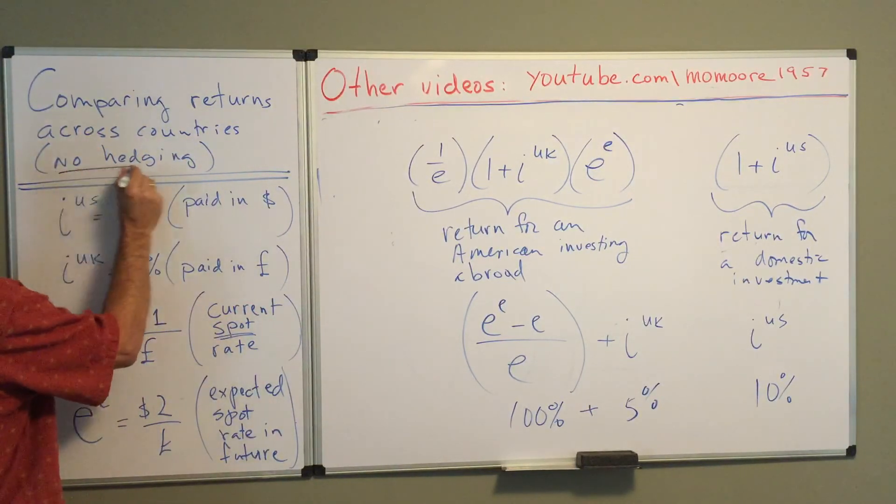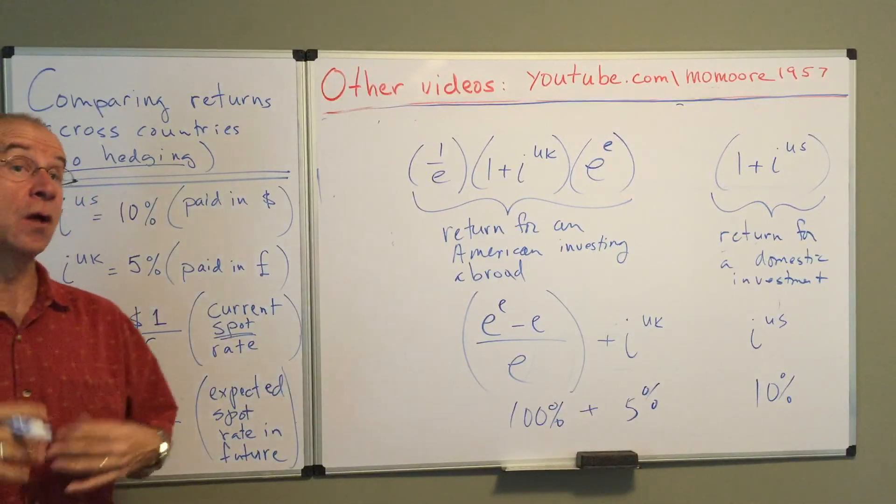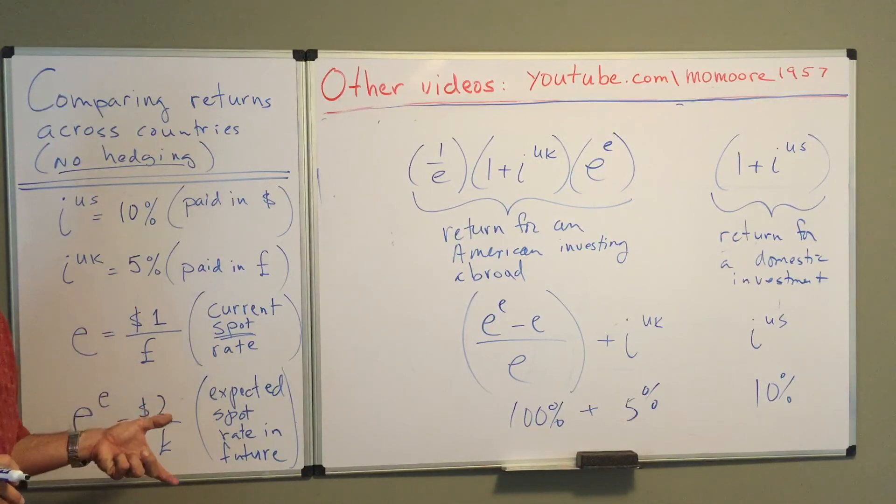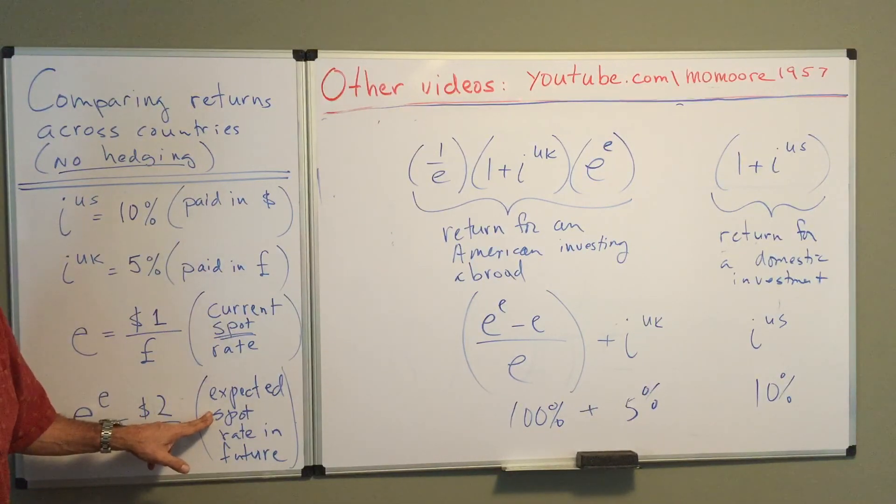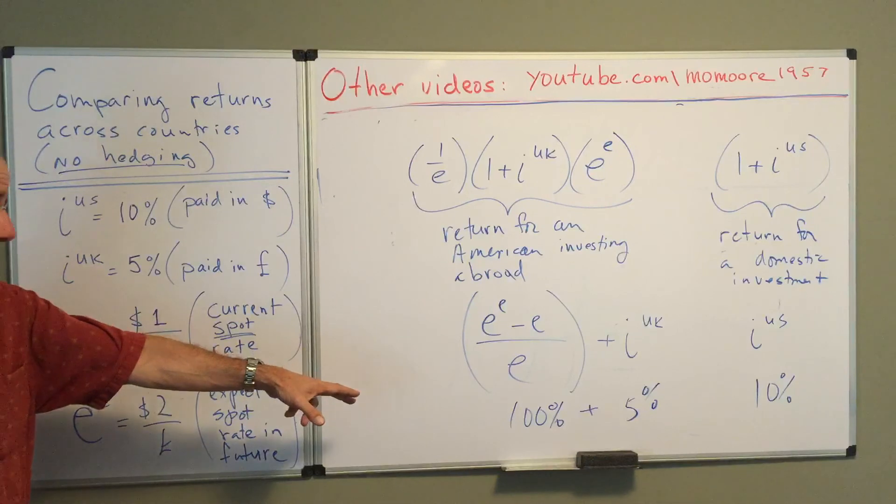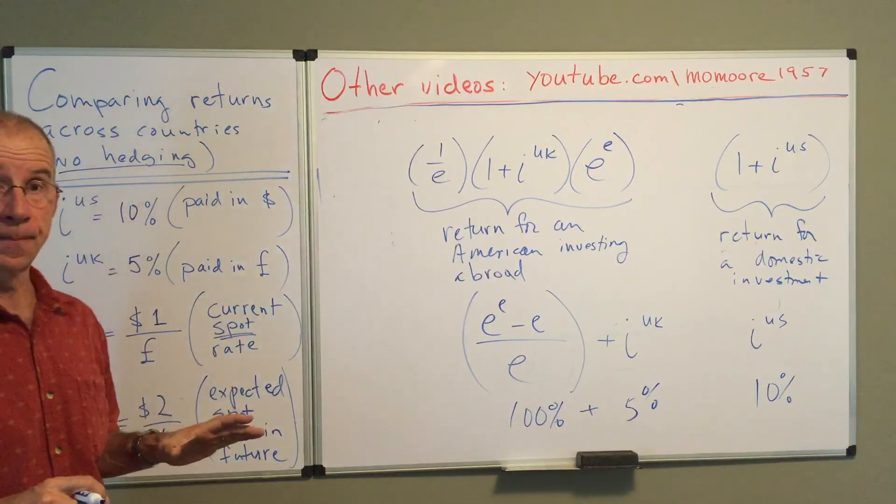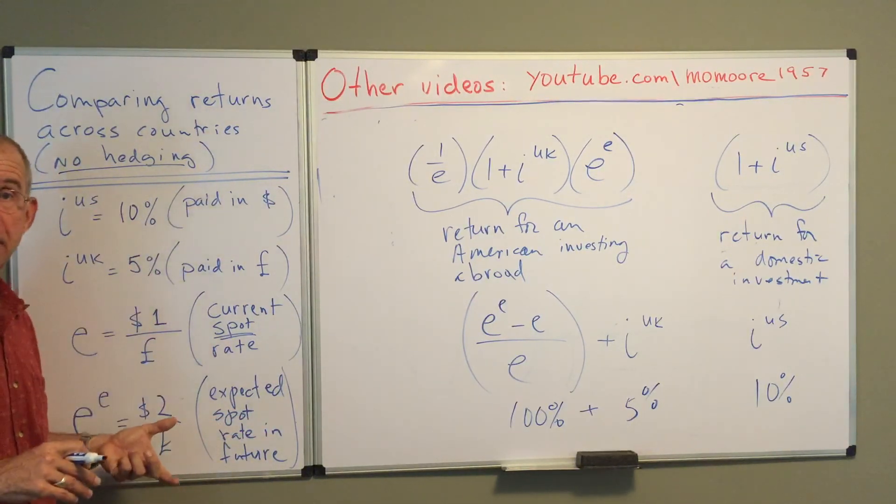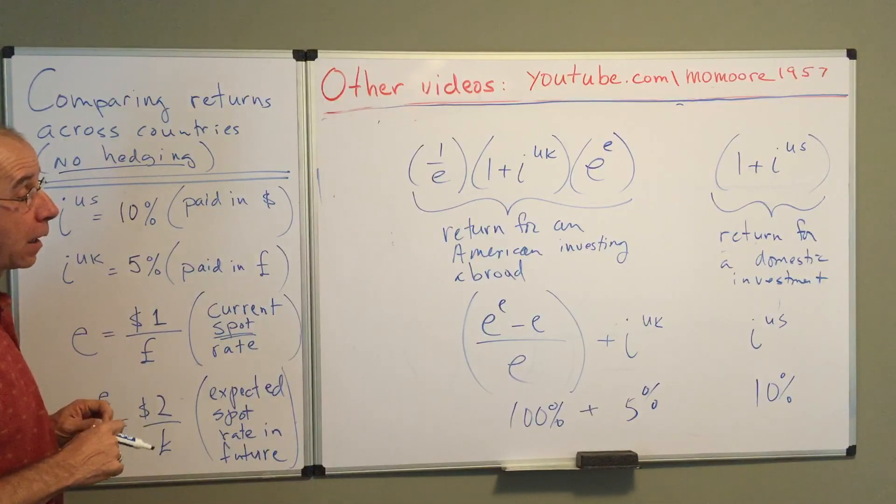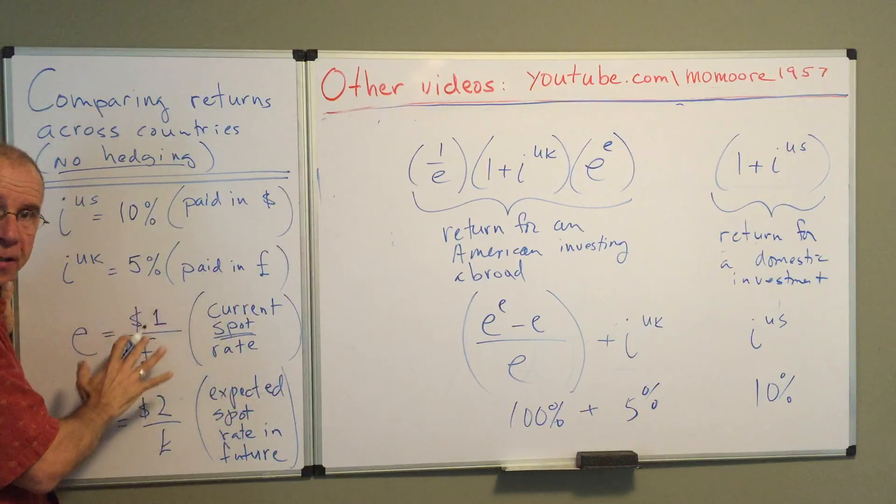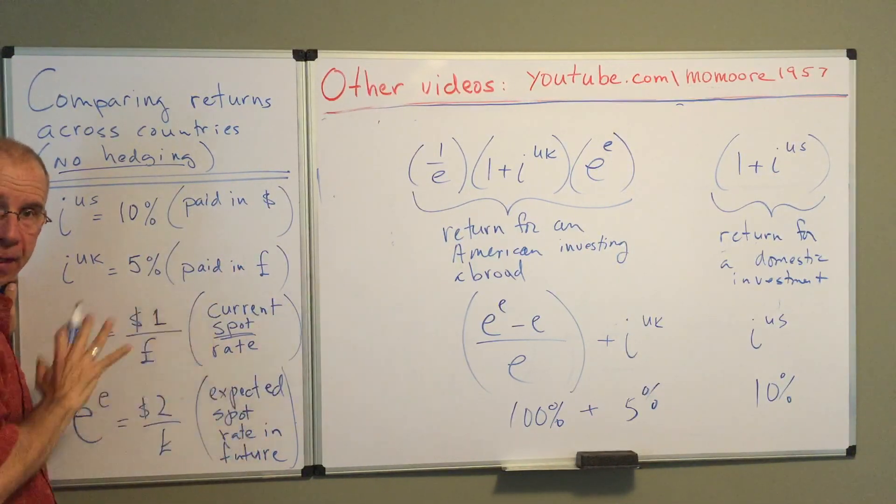Now, let me emphasize again that this involves no hedging. The expectation here in this example is that there's an expected large dollar depreciation, or expected large pound appreciation. Your expectations may not be right. You may invest in the British asset expecting to get this great return because of the changes in the exchange rate. You could be completely wrong. This speculation here may turn out to be a very misguided guess. We can talk about this same type of process with hedging, which we'll do in a subsequent video.